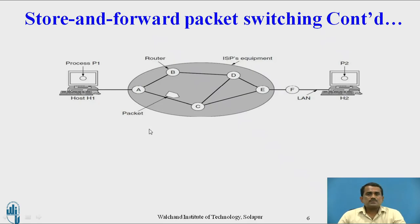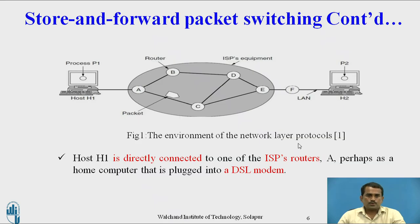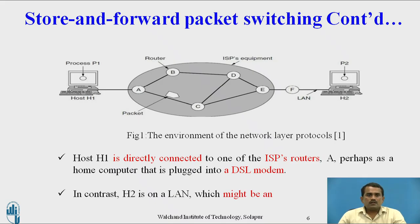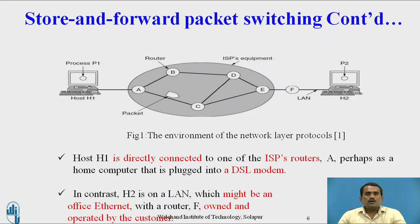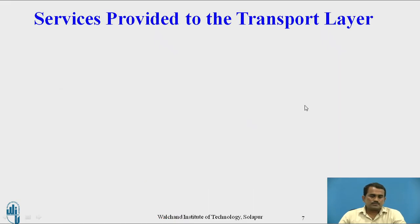By using this concept, the user can send packets. This is the environment of the network layer protocol. Host 1 is directly connected to ISP router A, perhaps as a home computer plugged into a DSL modem. In contrast, host 2 is on a LAN, which might be an office Ethernet with router F operated by the customer. First all data is stored, then forwarded to the next user.